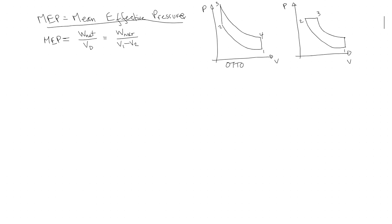In both these cycles, the first step from one to two is always isentropic compression over the full range — from v1 down to v2, covering the full compression ratio.